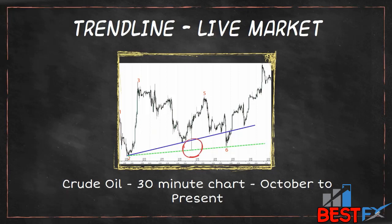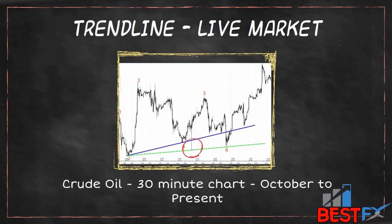Something interesting happens between the action at swing 4 and swing 5. The price spikes down, penetrating the trend line, but then continues on essentially in the same trajectory. This is usually significant, and the more you watch market action and charts, you'll develop an eye for these types of things. To account for this, we draw the green dashed line connecting swing 2 and the spike and extend the line, but we also leave the blue trend line in place as our primary trend. You can see the intermediate swings between 5 and 6, and price absolutely respects that area of support, before making a big move higher.